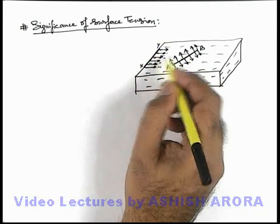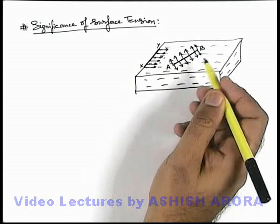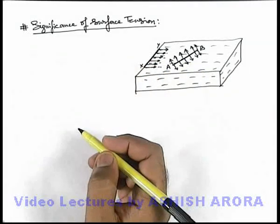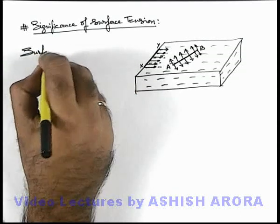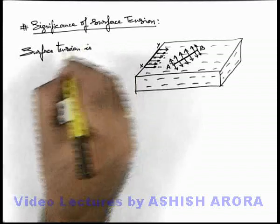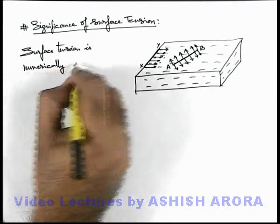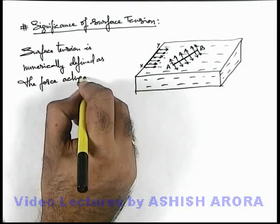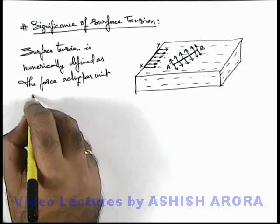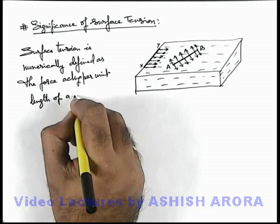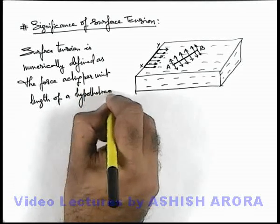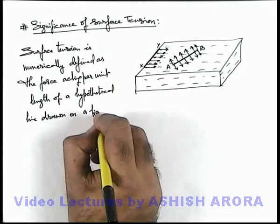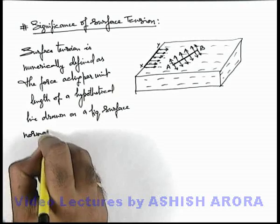Using surface tension we can find out the total force. For this purpose we need to give a mathematical or analytical significance to surface tension. So note it down carefully. Numerically, surface tension is defined as the force acting in the direction of the surface, per unit length of a hypothetical line drawn on a liquid surface.